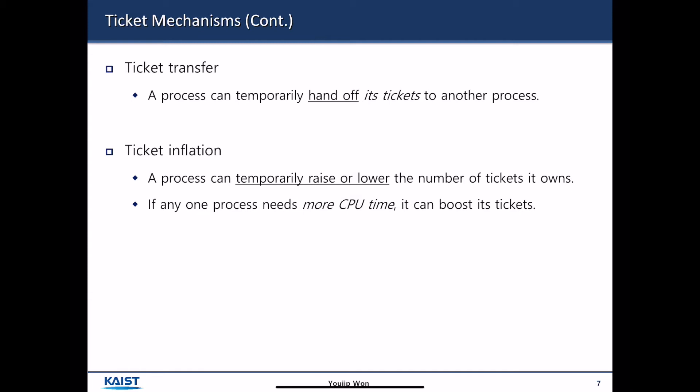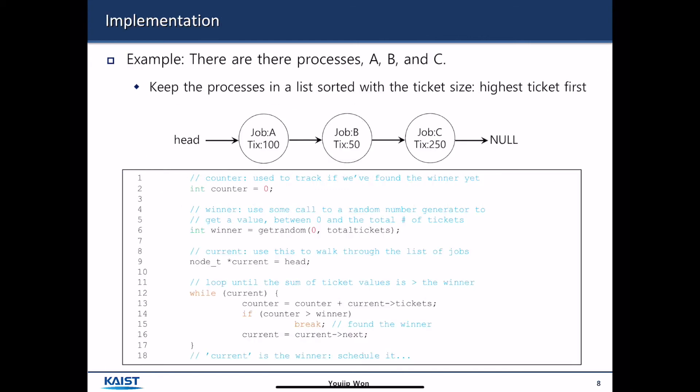Also, a process can temporarily hand off its tickets to another process. This is to boost up the CPU priority. And there is a notion of ticket inflation. A process can temporarily raise or lower the number of tickets it owns. If any one process needs more CPU time, it can actually ask the OS to boost its tickets. It has to ask. So that's what the ticket lottery scheduling is for.